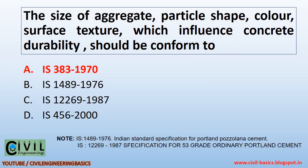The size of aggregate, particle shape, color, surface texture — which influence concrete durability — should be conformed to the relevant IS code. IS 1489-1976 is the Indian Standard Specification for Portland Pozzolana Cement. IS 12269-1987 is the specification for 53 Grade Ordinary Portland Cement.